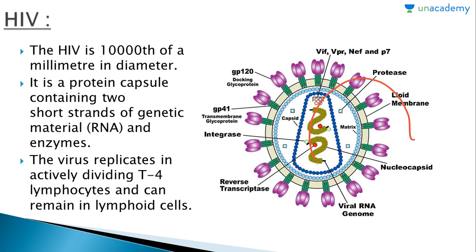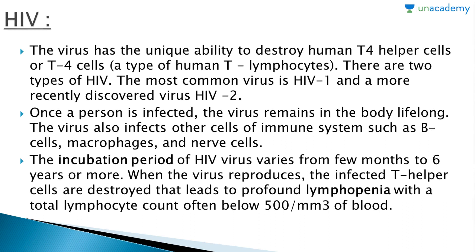Other structures are also present including gp41, gp122, proteases, and the lipid membrane. The virus has the unique ability to destroy human T4 helper cells, a type of human T lymphocytes. There are two types of HIV: the most common is HIV-1 and a more recently discovered virus is HIV-2. Once a person is infected, the virus remains in the body lifelong. It also affects B cells, macrophages, and nerve cells. The incubation period varies from a few months to six years or more. When the virus reproduces, the infected T helper cells are destroyed, leading to profound lymphopenia with a total lymphocyte count often below 500 per cubic millimeter of blood.